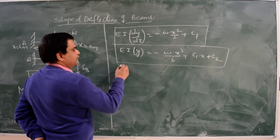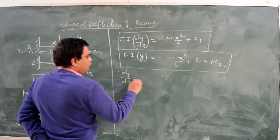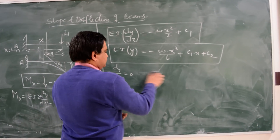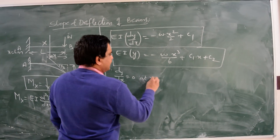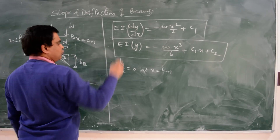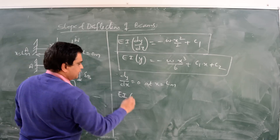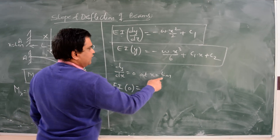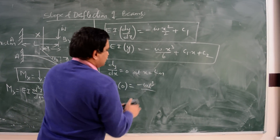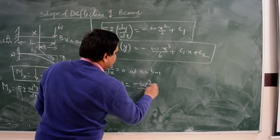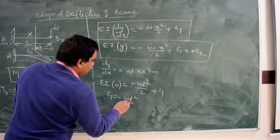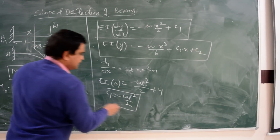To find C1, we apply the boundary condition: dy/dx equals 0 when x equals L meters (no slope at the fixed support). Substituting gives: 0 equals minus W times L²/2 plus C1, so C1 equals plus WL²/2. This is the first integration constant.